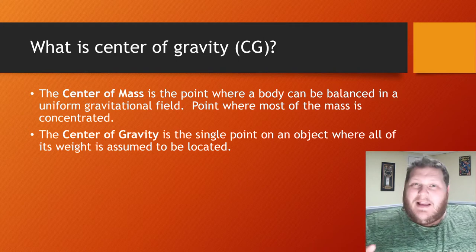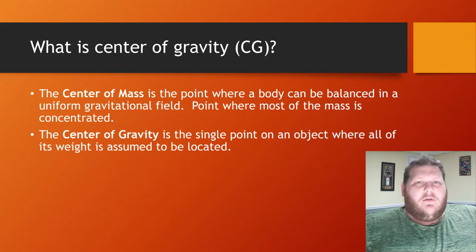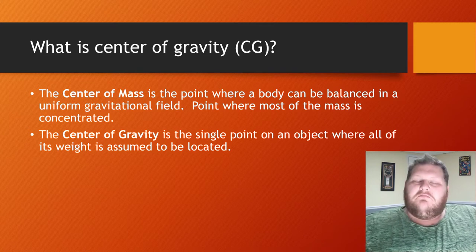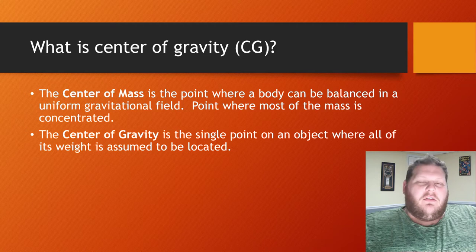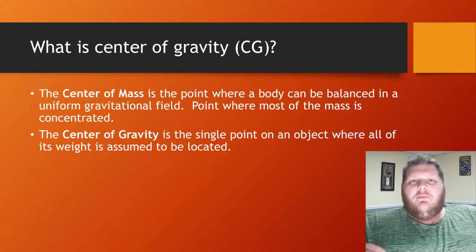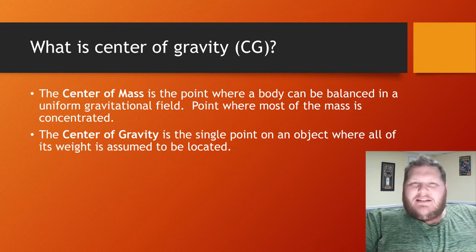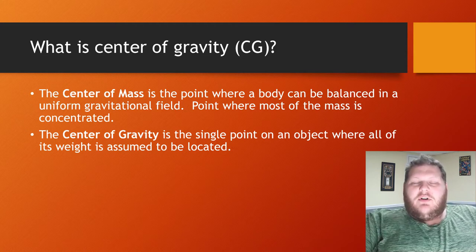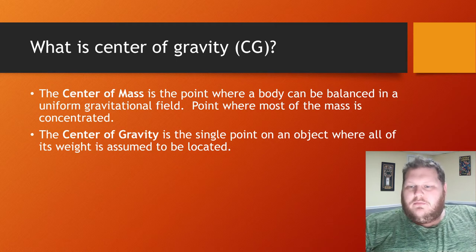The center of mass and center of gravity are almost always the same exact point. The center of mass is where that average is for the amount of mass in the object. The center of gravity is where, if we draw force diagrams or different applications, that single point where all of the weight of that object is acting on.